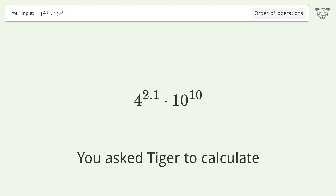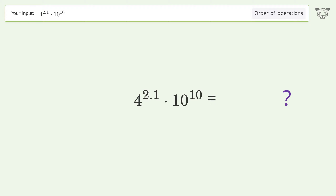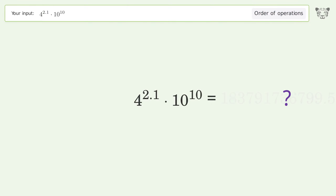You asked Tiger to calculate. This deals with the order of operations. The final result is 183,791,736,799.526.